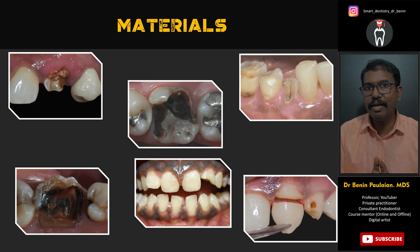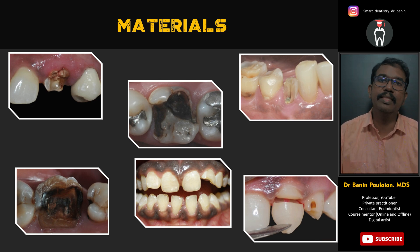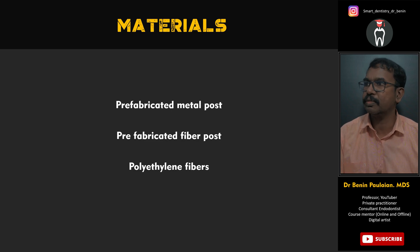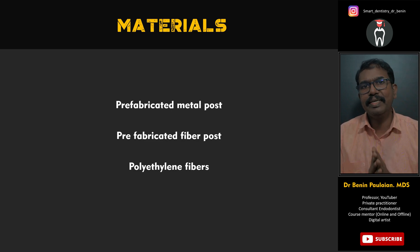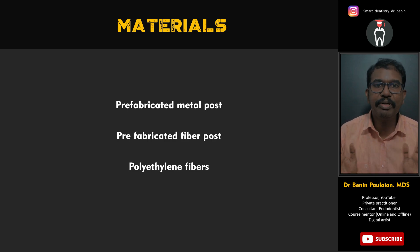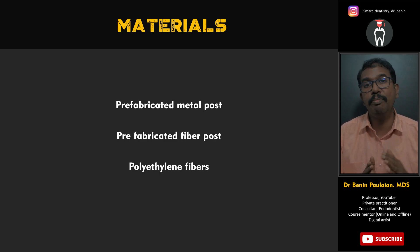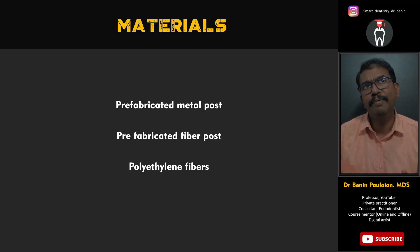At the end of this video you yourself will be able to make a decision on selecting the right post for these situations. Broadly, there are three types of post and core materials to understand: the prefabricated metal post, the prefabricated fiber post, and the commonly called ribbon type of post materials, also known as polyethylene fibers.